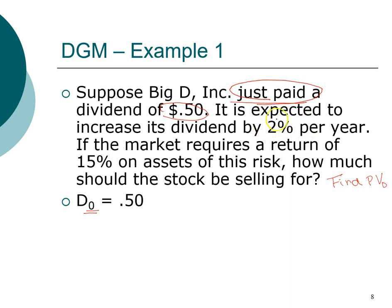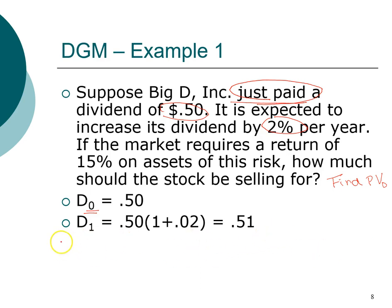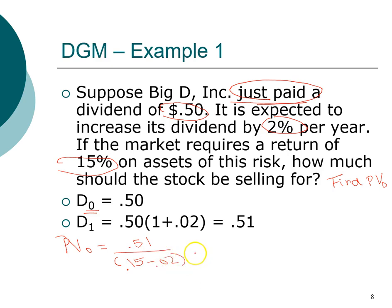We need dividend in year one to find the price of the stock today. Dividend in year zero is 50 cents growing at 2% per year, so 2% of 50 cents is one cent, giving us dividend in year one of 51 cents. The present value of this growing perpetuity is dividend in year one (51 cents) divided by the required return (15%, or 0.15) minus the growth rate (2%, or 0.02). The denominator is 0.13, giving a stock price today of $3.92.